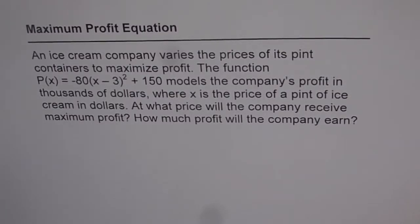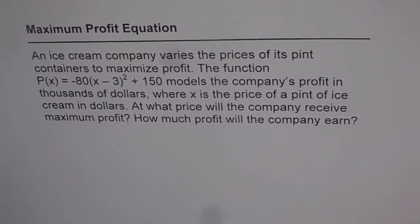Maximum profit from equation. An ice cream company varies the prices of its pint containers to maximize profit. The function P(x) = -80(x - 3)² + 150 models the company's profit in thousands of dollars, where x is the price of a pint of ice cream in dollars. At what price will the company receive maximum profit? How much profit will the company earn?